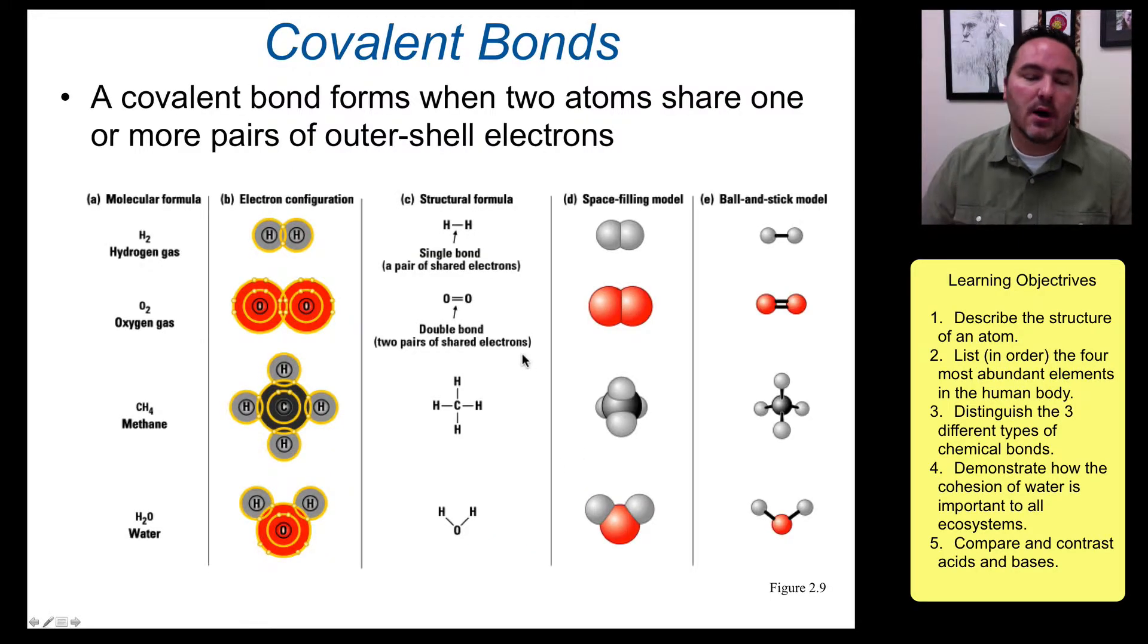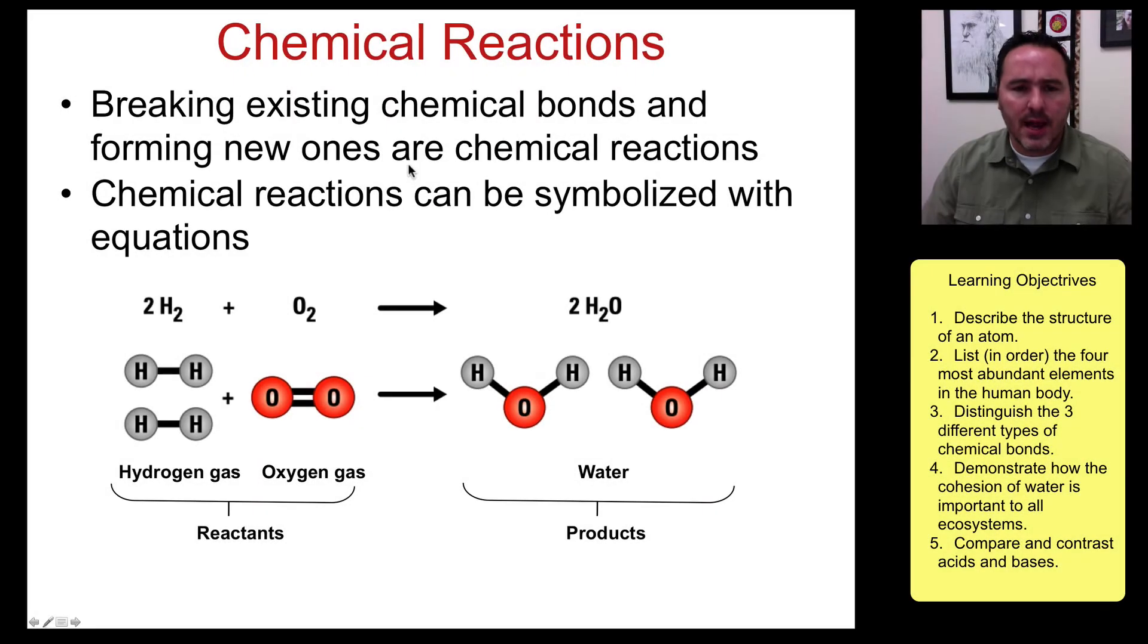Covalent bonds are different. This is where atoms look at each other and basically say, hey, I need to fill my outer shell. You need to fill your outer shell. Let's share. And so there is a sharing of protons that is done. Like here, hydrogen is sharing one electron with a neighboring hydrogen atom and therefore you have hydrogen gas.